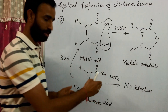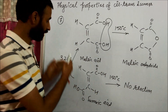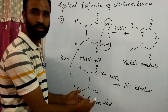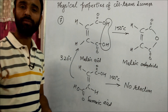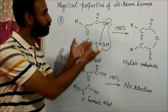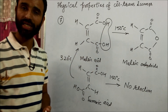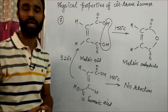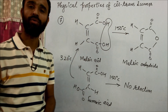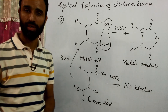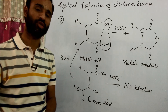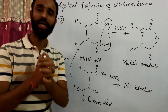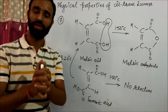But if we heat fumaric acid at around 320°C, it partially converts into maleic acid and we get maleic anhydride. That is all about the physical properties of cis and trans isomers. Thank you very much for watching this video. Please like, subscribe, and share the channel.